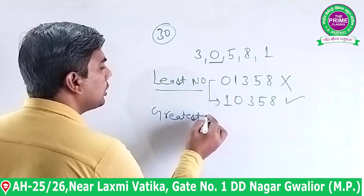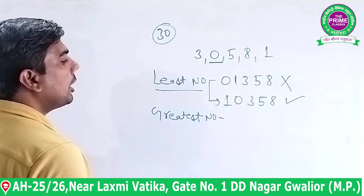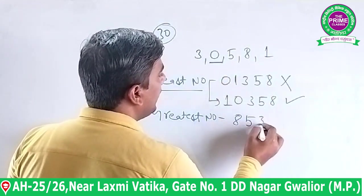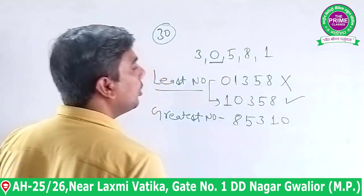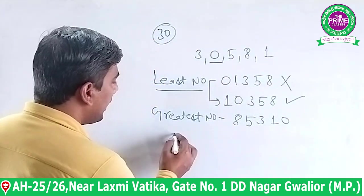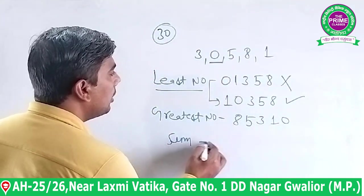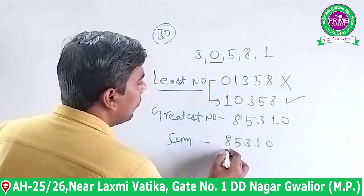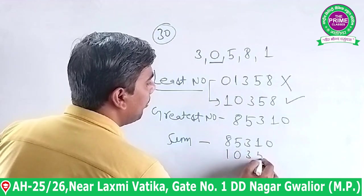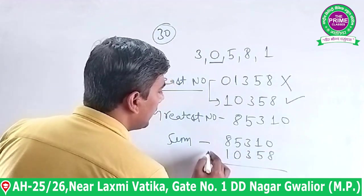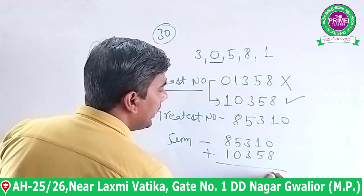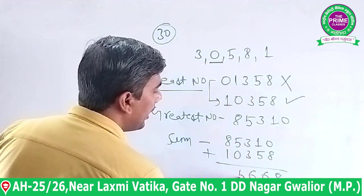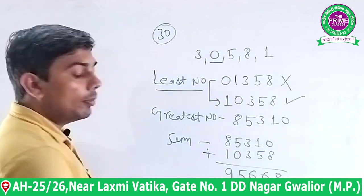Greatest number में कुछ सोचना नहीं है — सीधा सबसे बड़े digits आगे रखो। Greatest number बनेगा 85310। अब इन दोनों का sum करेंगे: 85310 + 10358 = 95668।